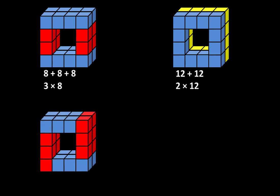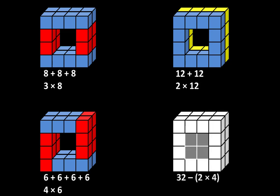The third structure can be described as 6 plus 6 plus 6 plus 6, or it can be described as 4 groups of 6. And the fourth structure can be described as 32 minus 2 groups of 4, or it can be described as 32 minus 8. In every case, the total is 24.